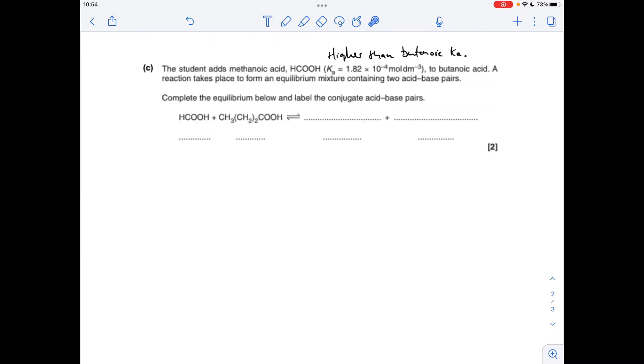And for the last part of the question, the student's adding methanoic acid to butanoic acid. We've got to write the equation and label the conjugate acid-base pairs. So you'll notice I've written above Ka for methanoic acid that it's higher than the butanoic one. So what does that mean? It means that methanoic acid is a stronger acid and therefore it will donate its H plus to the butanoic acid. So that's going to give us these two ions here.